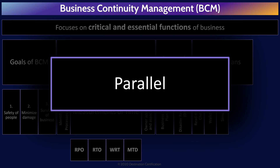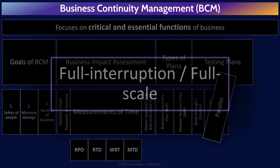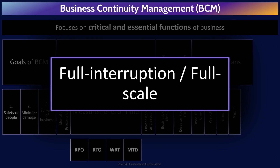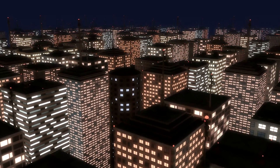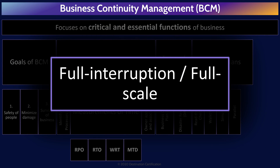A parallel test is the first time that any systems are actually touched by the test — specifically only backup systems and not production systems. This is again a scenario-based test. Some scenario is invented and people have to try and react to the scenario using the plan and trying to bring backup systems online. The final and most important type of test is a full interruption or full-scale test. This is literally where you cause a disaster. If you really want to know if your backup power system is going to work when the power is cut, the best way to test this is to cut the power. Full-scale testing should only be performed after every other test has been performed successfully and you have management's approval — remember CYA.